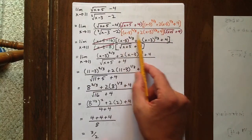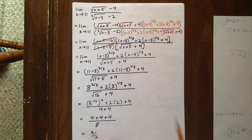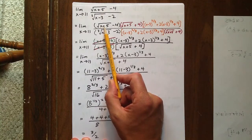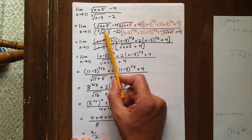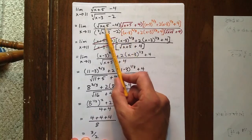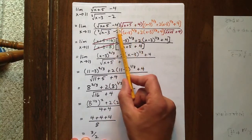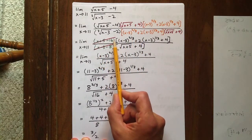So we introduce it to the denominator to rationalize that, but we're also going to introduce it to the numerator. When we expand out these two factors, we get x plus 5 times, we get x plus 5 from multiplying the first term in each, and the middle terms cancel out, and we have minus 16. So we get x plus 5 minus 16.